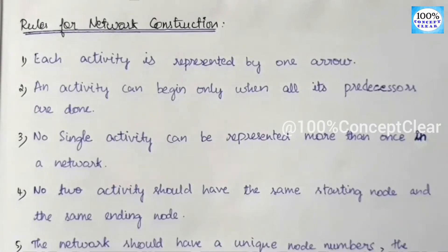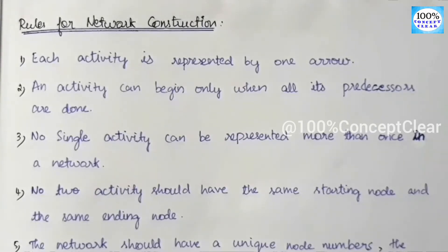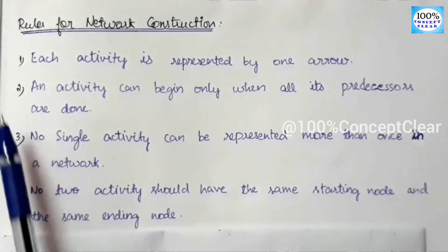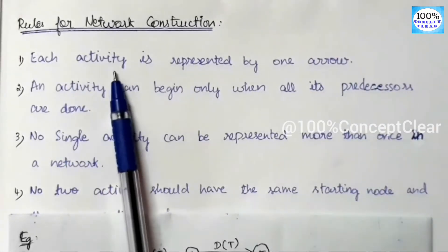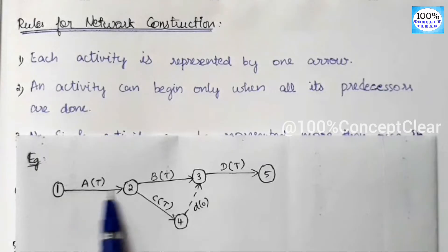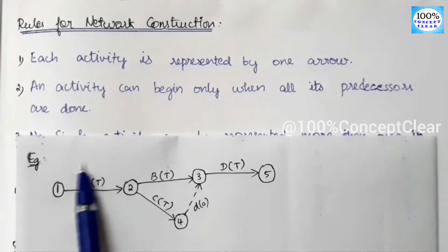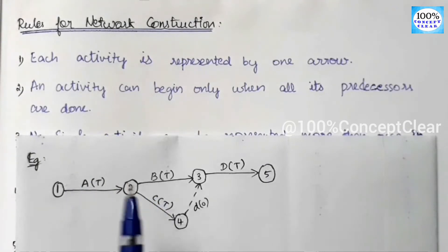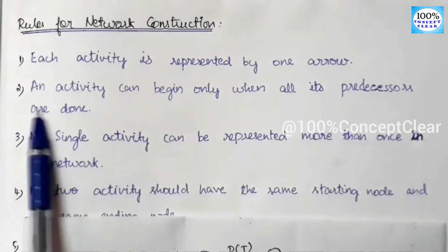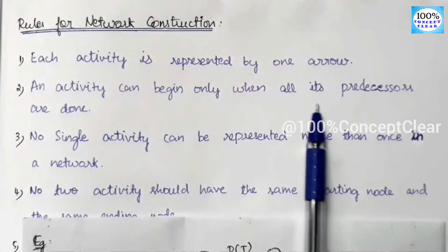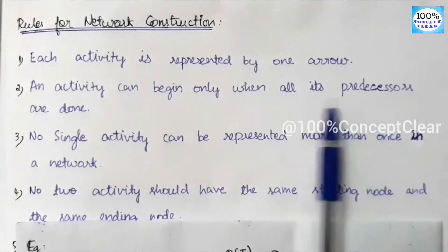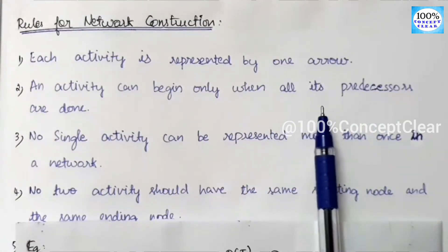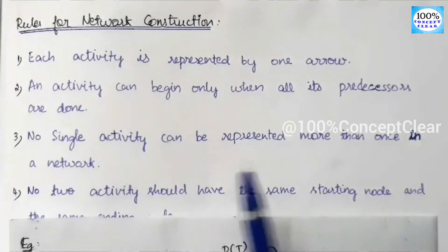The next topic is rules for network construction. The first rule: each activity is represented by one arrow only — one activity corresponds to one arrow. The second rule: an activity can begin only when all its predecessors are done. Before we begin any activity, the predecessor activity must be completed first.